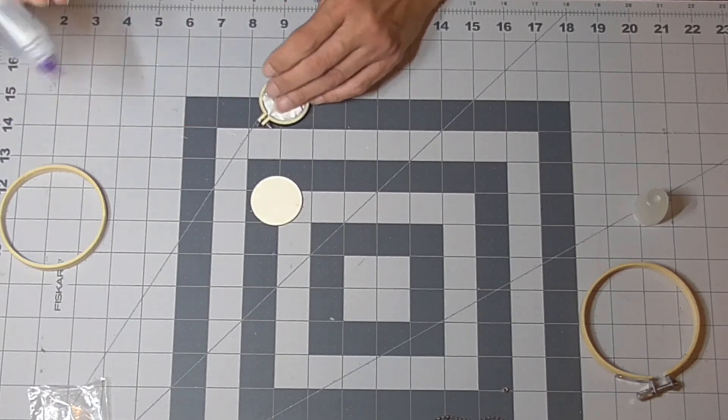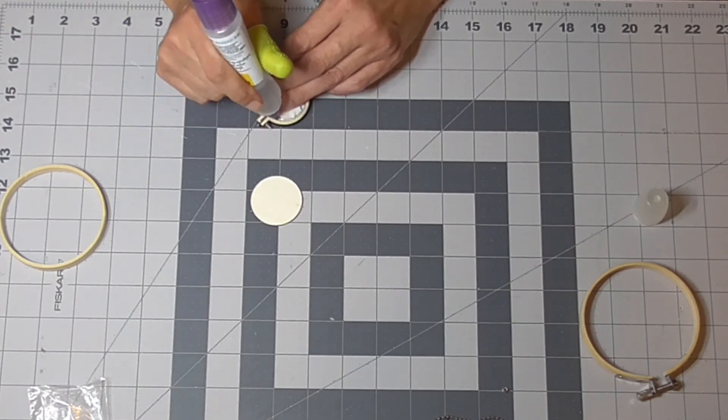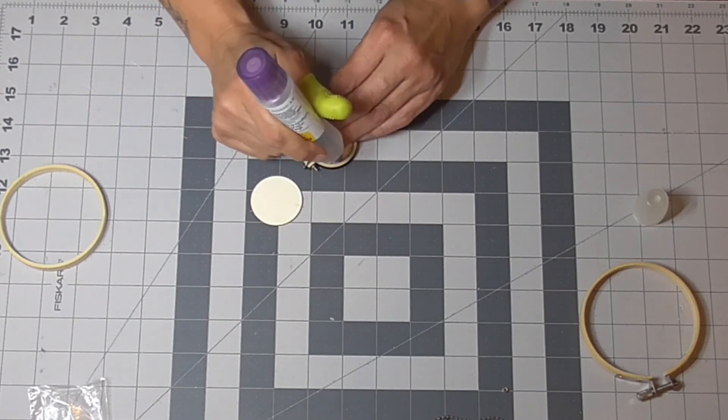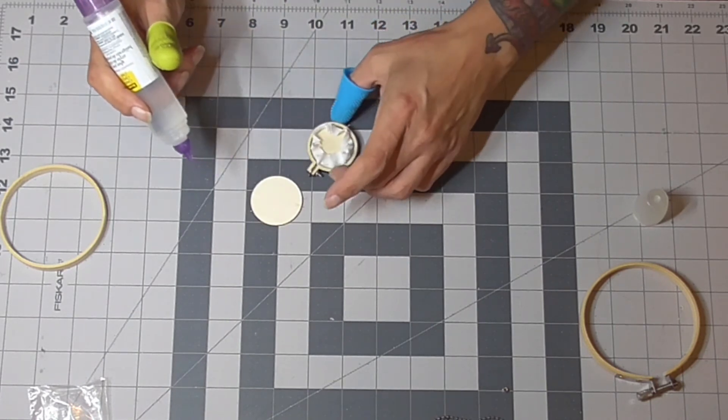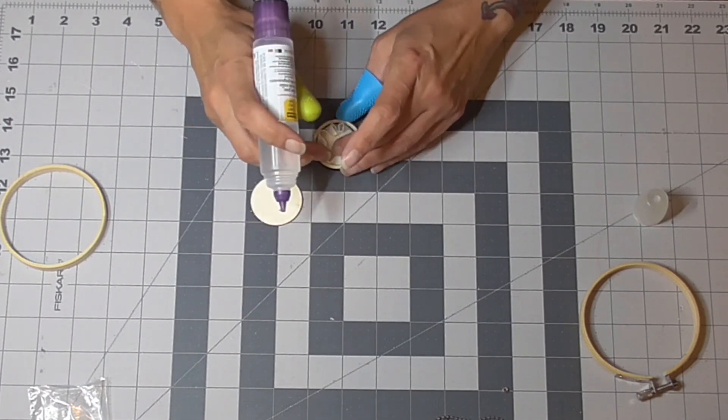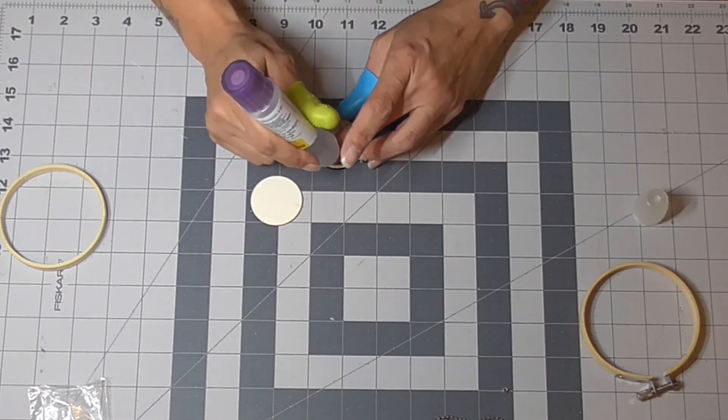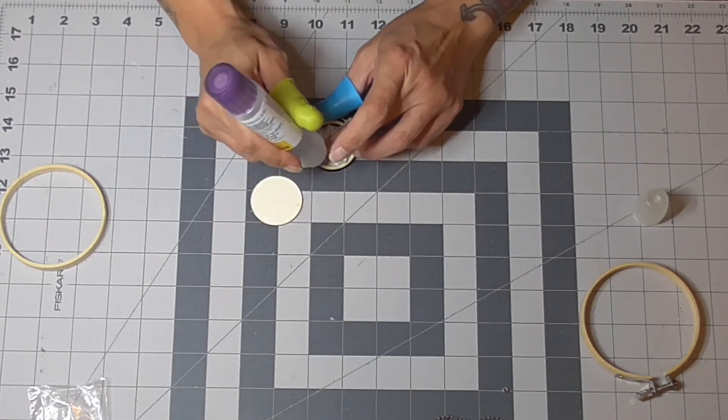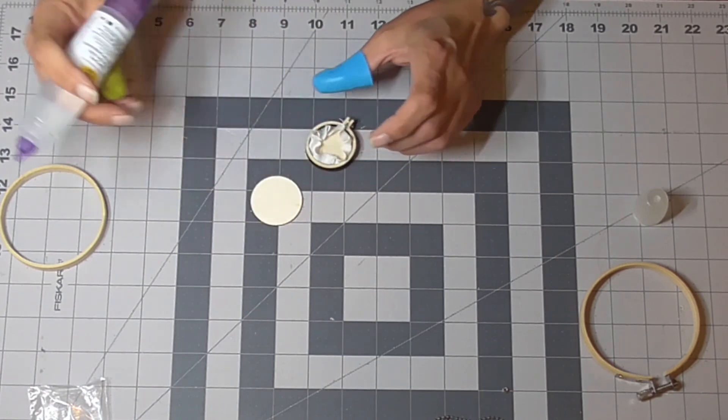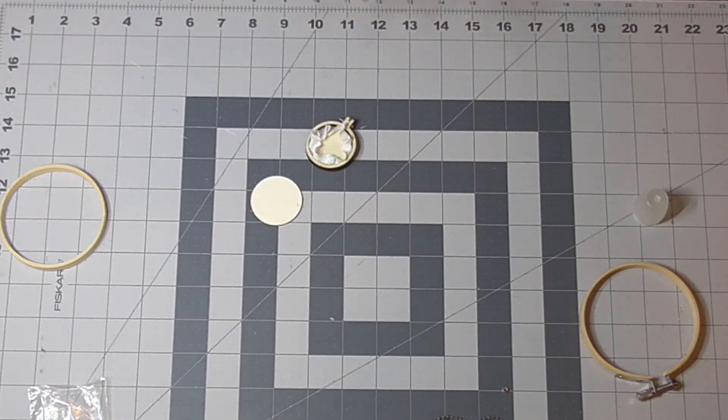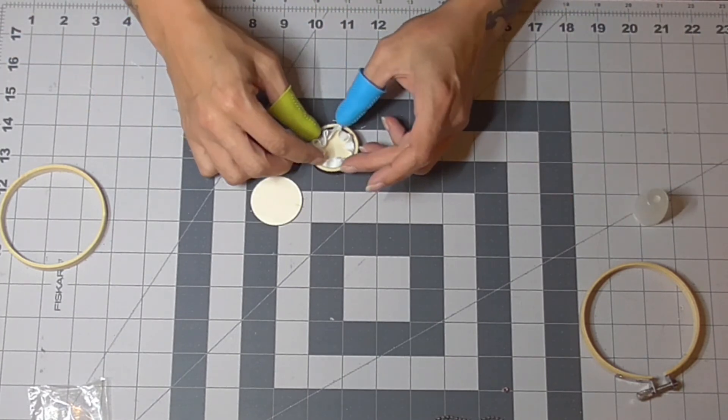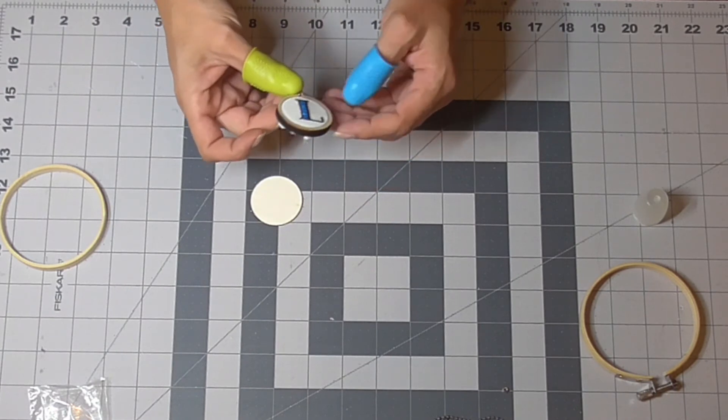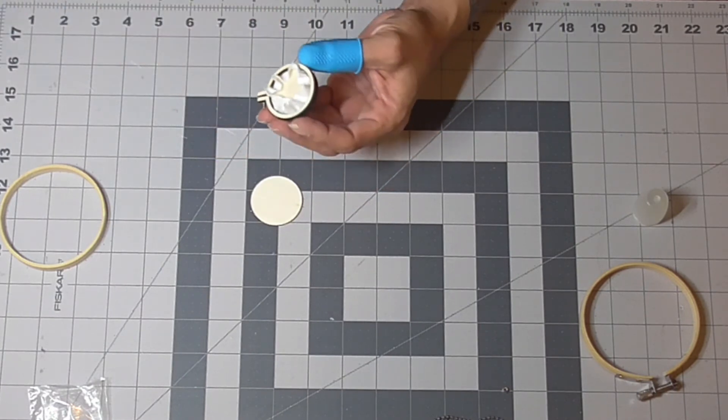I'm going to put a couple dots of glue. I'll help to hold everything in place between the fabric and the outside of the frame. You have a lot of excess fabric. You can go ahead and trim that off.